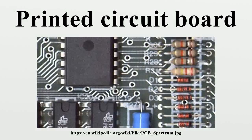A printed circuit board mechanically supports and electrically connects electronic components using conductive tracks, pads and other features etched from copper sheets laminated onto a non-conductive substrate. PCBs can be single-sided, double-sided or multi-layer. Multi-layer PCBs allow for much higher component density.